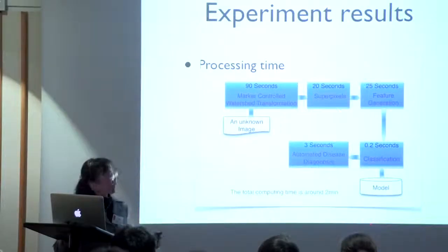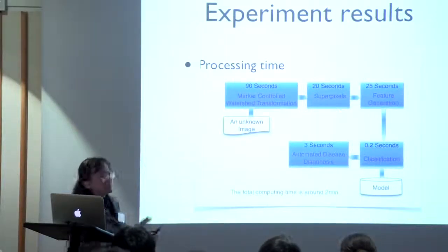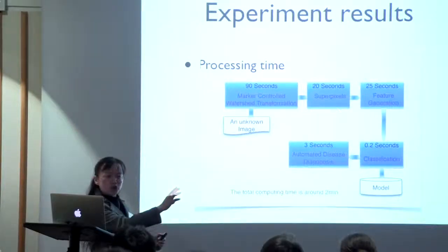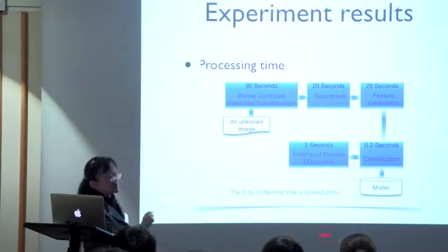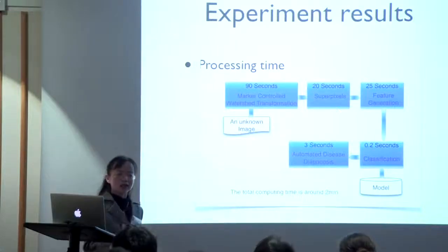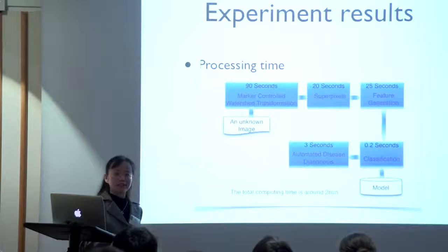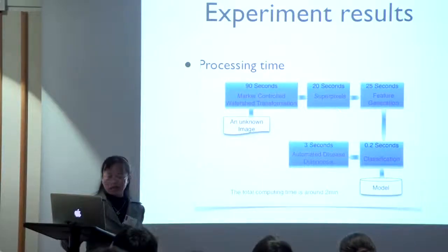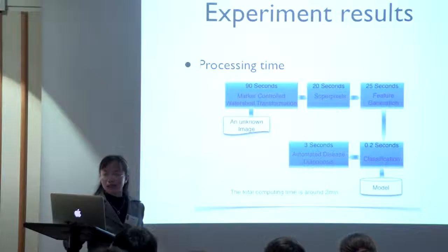Processing time at the moment: this is just the sequential code, not yet parallelised. Currently it takes around two minutes to classify one image. Certainly, if we consider real-time processing — one second — we will need to consider parallel processing later on.